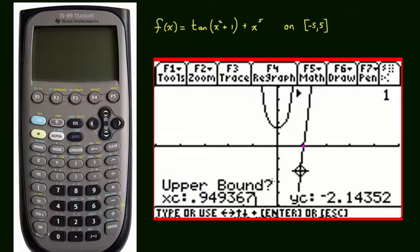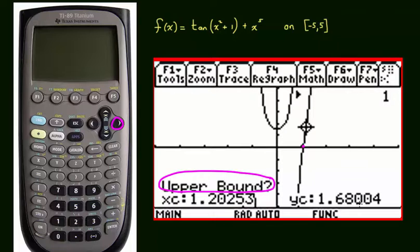Once I press enter, it's now asking me for the upper bound. Again, I would want to call that the right bound. So I'm going to continue to press my arrow key, so that I can locate a point to the right of the zero. Once I am satisfied, I'm going to press enter once again.